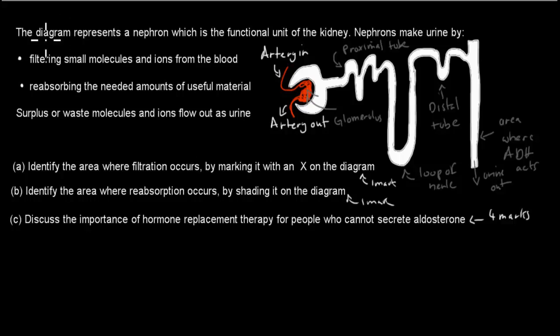The question says: the diagram represents a nephron, which is a functional unit of the kidney. Nephrons make urine by filtering small molecules and ions from the blood and reabsorbing the needed amounts of useful material. Surplus of waste molecules and ions flow out as urine. Part A: identify the area where filtration occurs by marking it with an X on the diagram. That's worth one mark.